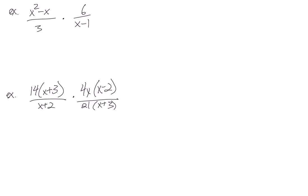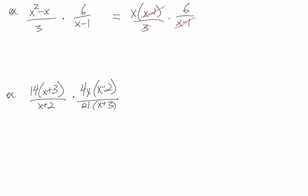Let's go through a couple more that are a bit harder. In this first case, we can't cancel anything other than the 3 and the 6 without factoring first, so the first step is to factor the top — we can take out a common factor of X, leaving us with X times (X minus 1). The 3 is done, and on the other fraction 6 and (X minus 1) are already factored. Now that we've factored, we can cancel the entire factor of (X minus 1) and also cancel the 3, leaving just a 2 on top. So our final answer is 2X on the top.